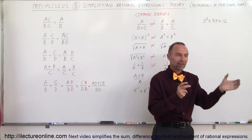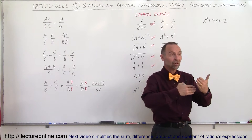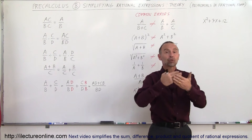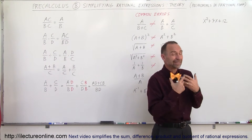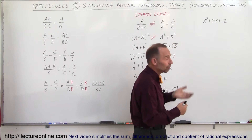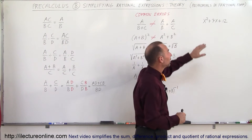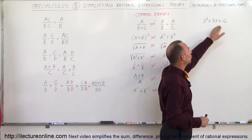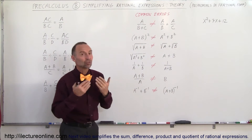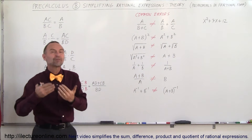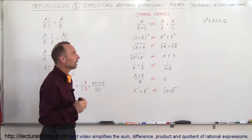An equation has a left side, a right side, and an equal sign. An expression is just a sum of terms — it could be a single term, a single character, 3x, or whatever. A rational expression is an expression in the form of a fraction, so rational means that it's a fraction.